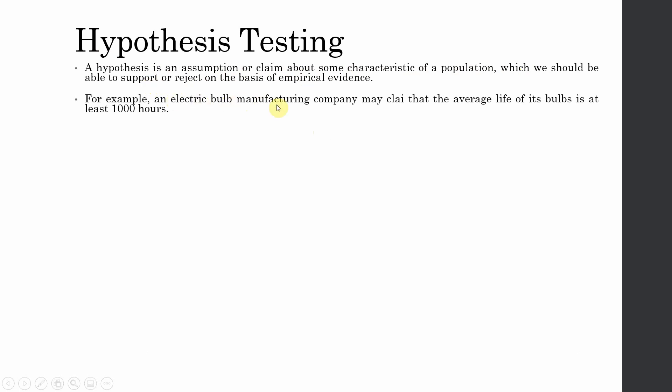For example, an electric bulb manufacturing company may claim that the average life of its bulbs is at least 1000 hours. This is a hypothesis — a claim that can be accepted or rejected. To test this claim, if they are producing 1 million bulbs a month, you can take a sample of 100 or 200 bulbs, light them for 1000 or 2000 hours, record their lighting time, and compare against the population mean or their claim.